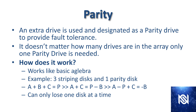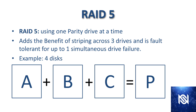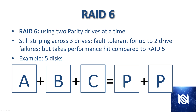RAID 5 uses one parity drive at a time. This adds the benefits of striping across three drives and is fault tolerant up to one simultaneous drive failure. In this example with four disks, data is striped across A, B, and C, with one parity drive that doesn't add storage capacity to the array. This triples the write speed since all data is striped across A, B, and C.